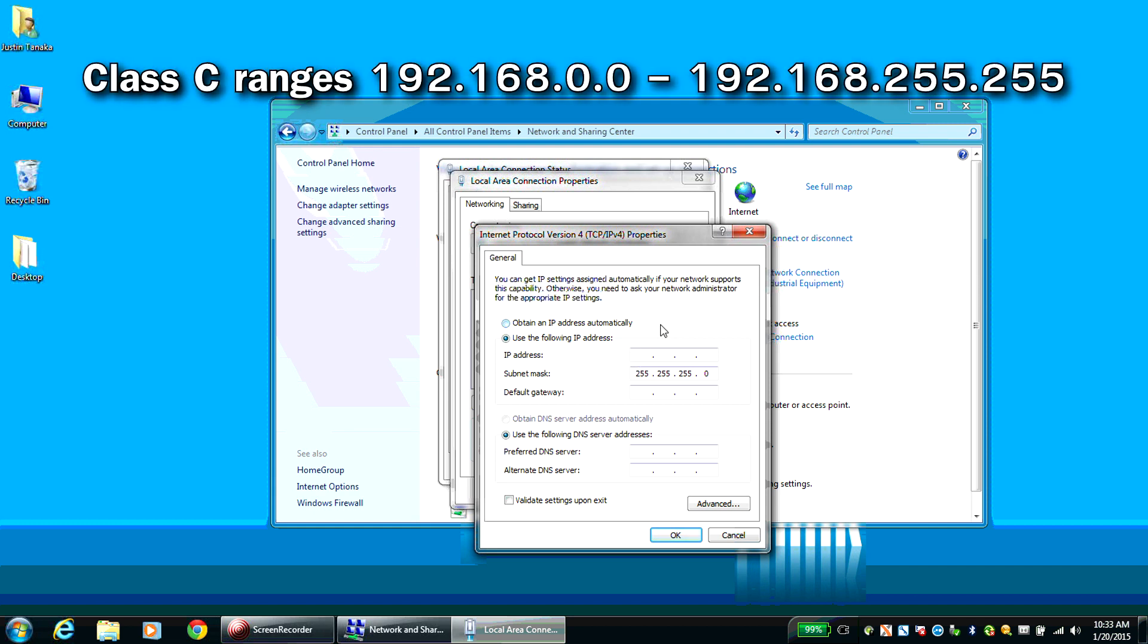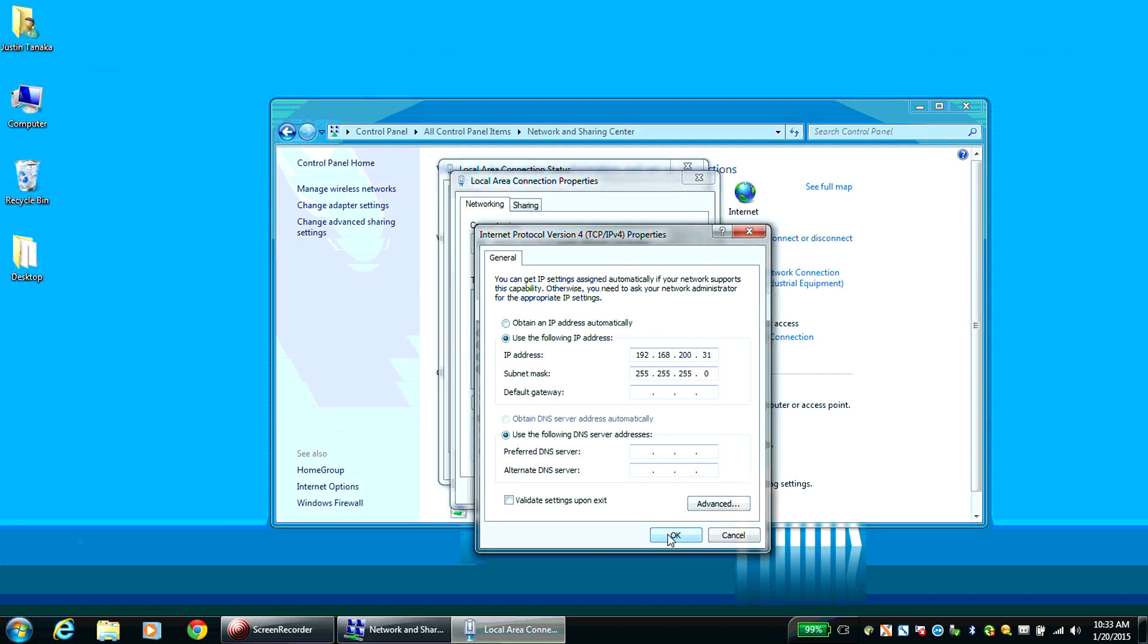It is recommended that Private IP address Class C is used. However, you cannot set 0 and 255 in the fourth set of three numbers. In this example, 200 and 31 are used in the third and fourth sets respectively. Click OK to set your values.